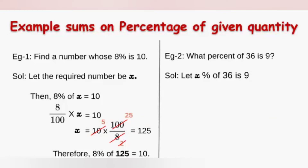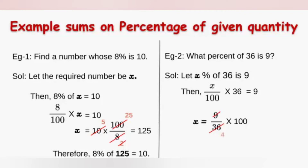So let us think x percent of 36 is 9. x percent means x by 100, so x by 100 into 36 is equal to 9. Transposing, x is equal to 9 by 36 into 100. Cancelling 9 and 36, and then 4 and 100, we get 25. Therefore x is equal to 25, which means 25 percent of 36 is 9.